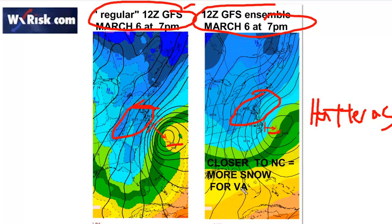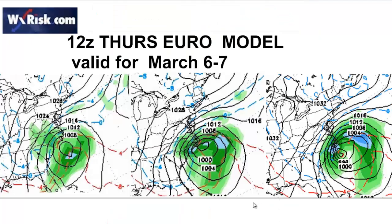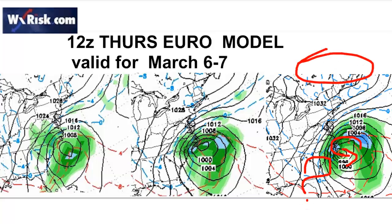This is the Thursday afternoon European model. Look what the European model does — it brings the system up towards Hatteras, snow gets into southeastern Virginia, then it goes back south. Why does it do that? Because of the blocking feature up in here — that's what the model is telling us.